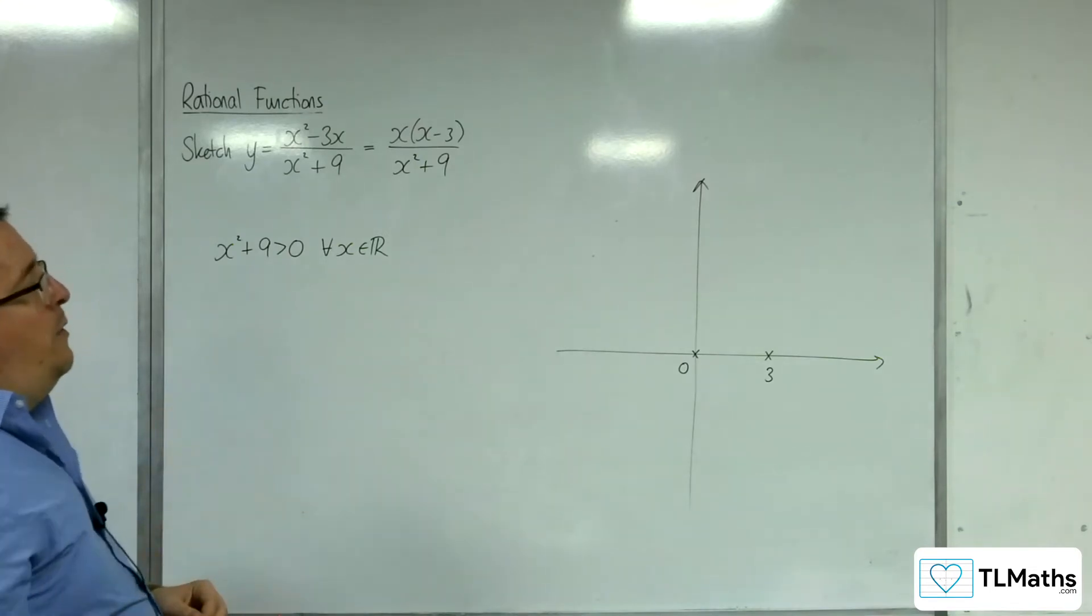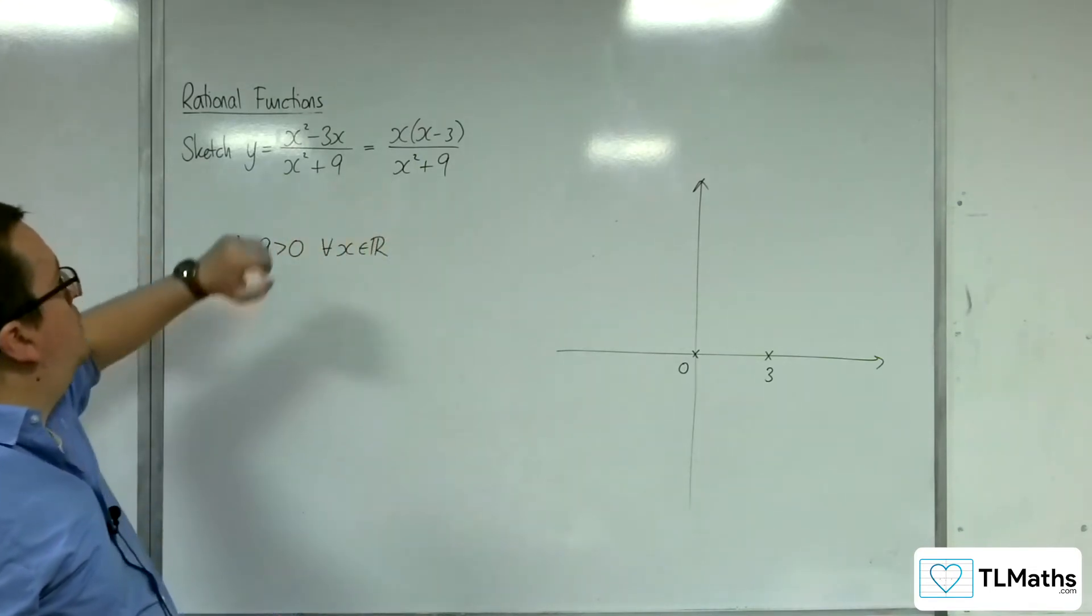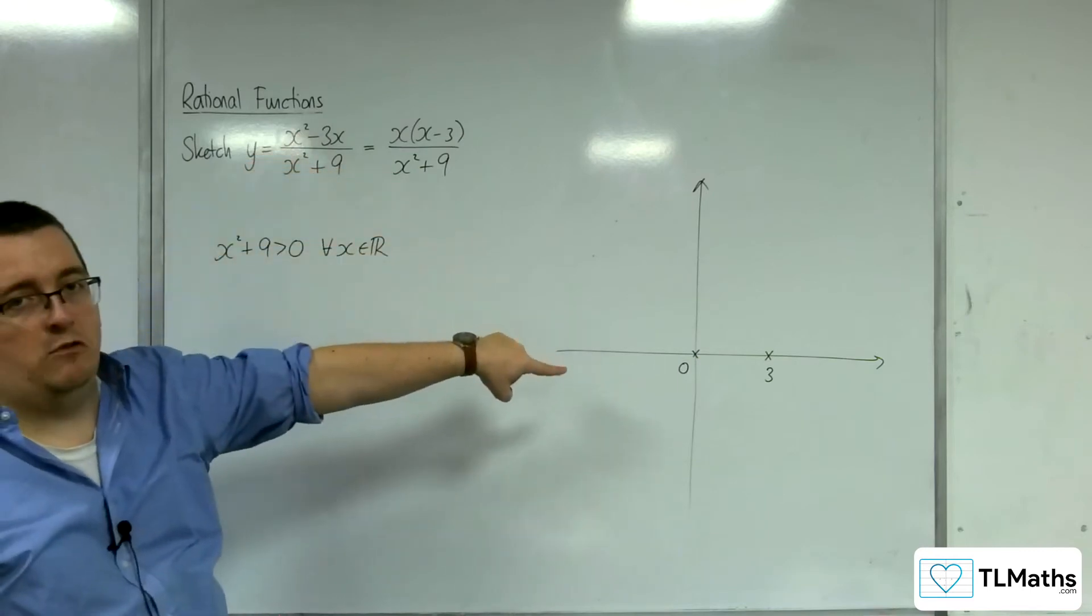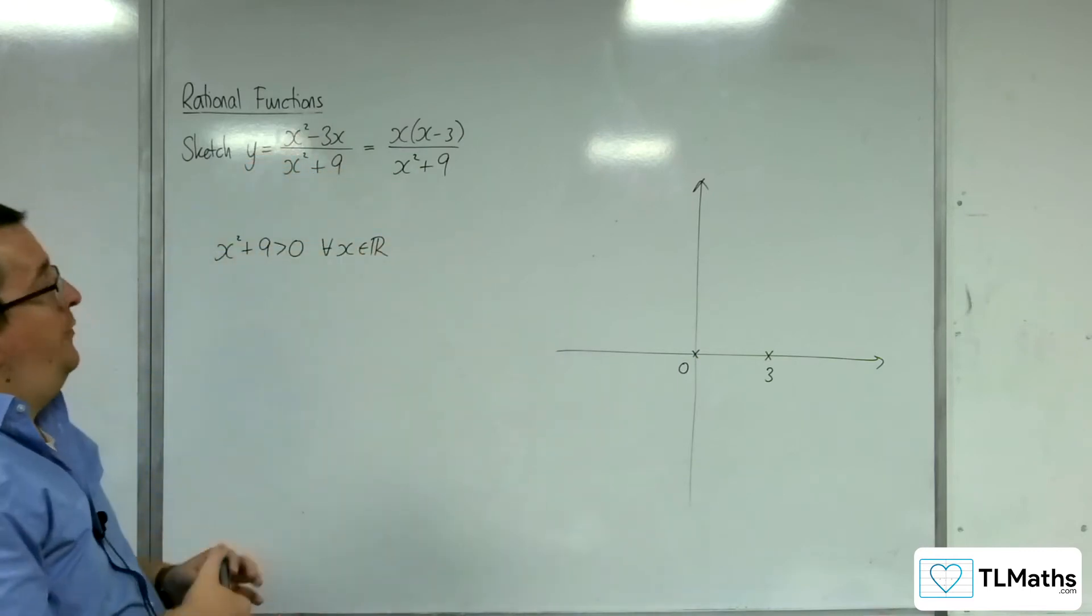How about where it crosses the y-axis? Well, that would be when x is 0, which is 0. So (0, 0) is our point of intersection.